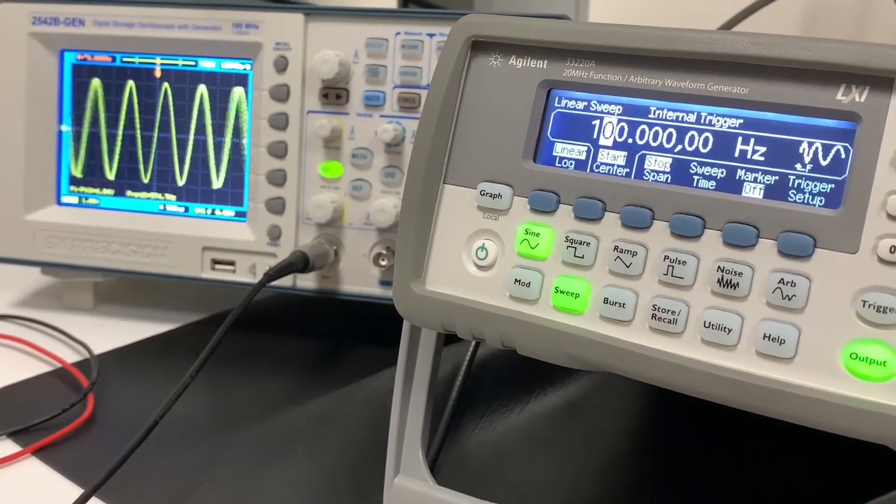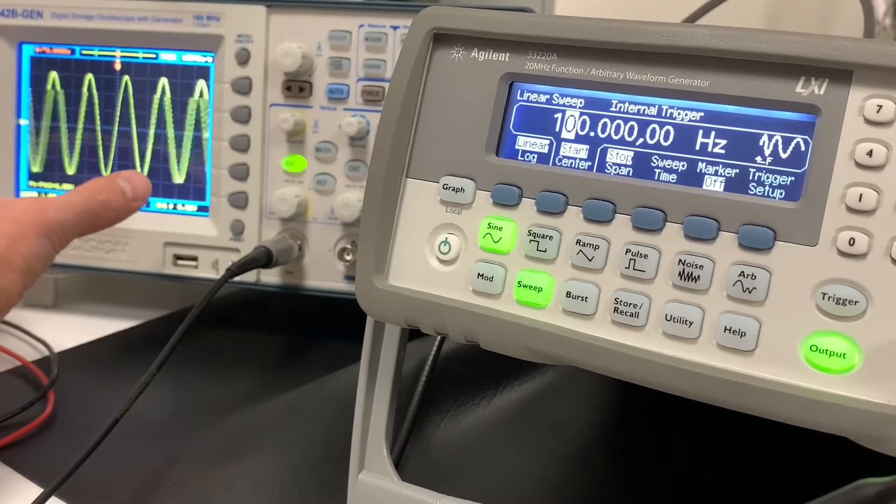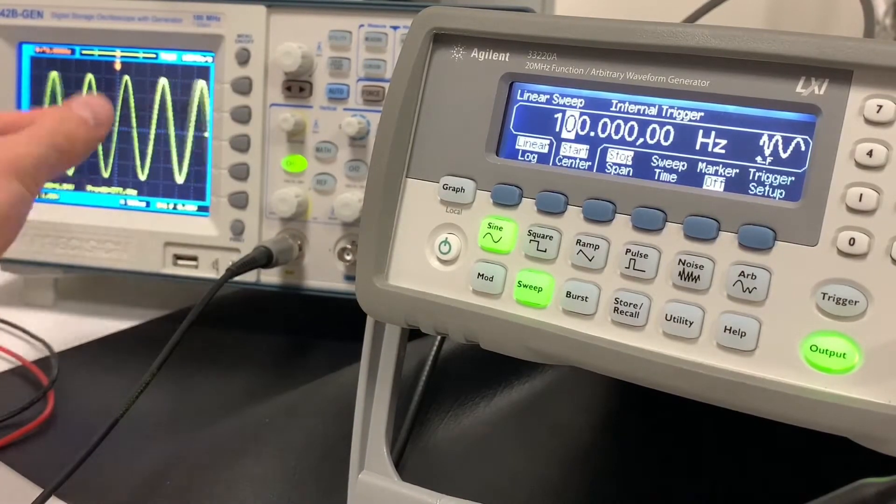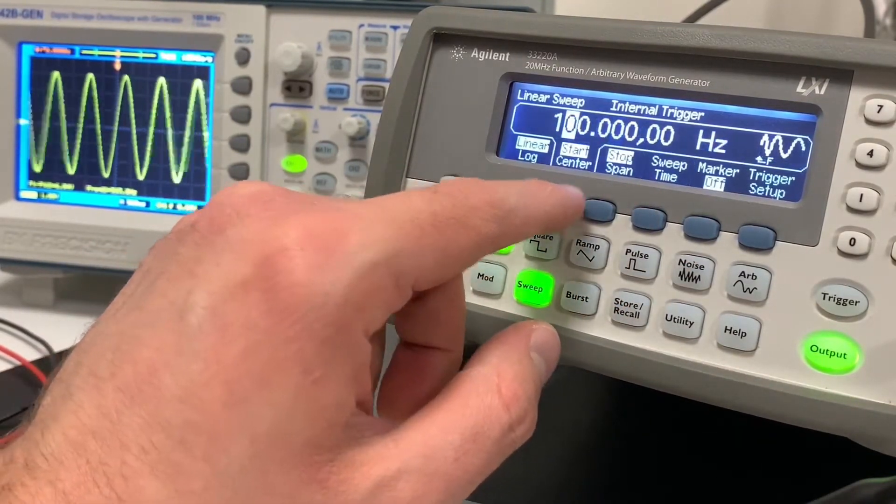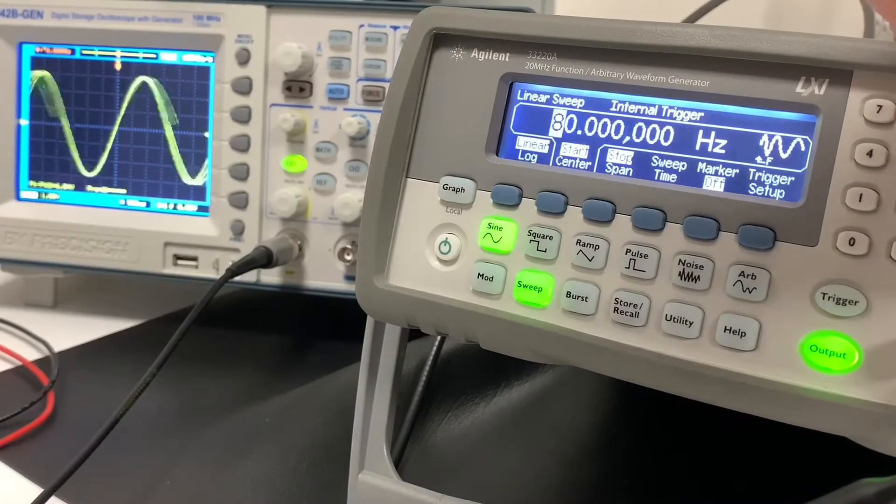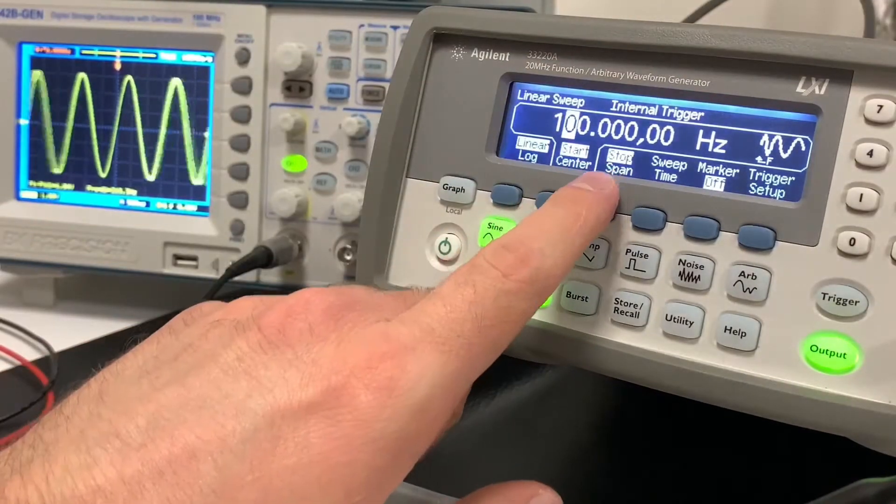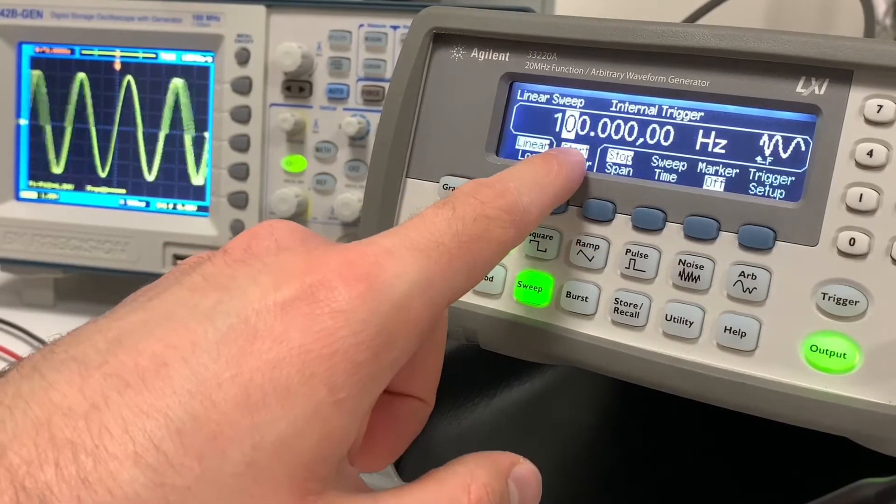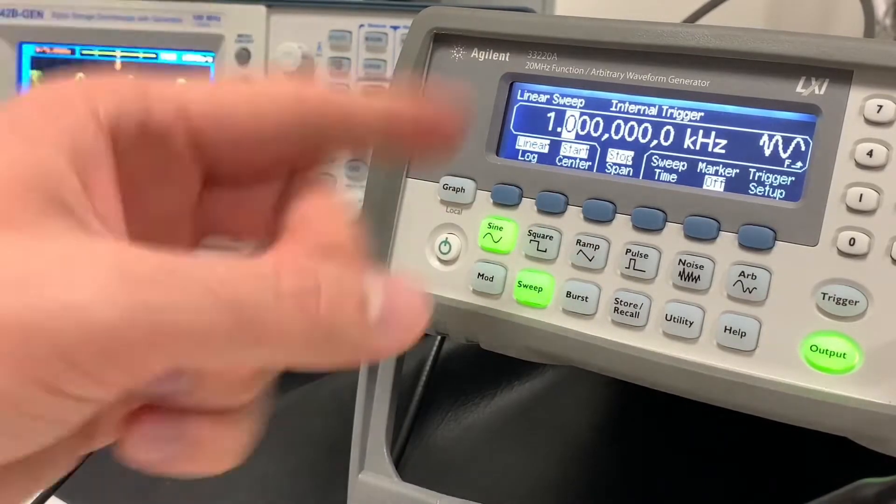So I'll turn on the output, and you can see here I have it set to sweep. And you can see the frequency is increasing, and then going back to the original setting, and increasing again. I can use the options on here, for example, like start, and change what the start frequency is going to be, and also change the stop. So this is the ending frequency. So it's going from, in this case, 100 hertz to 1 kilohertz, and then going back to the beginning again.